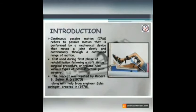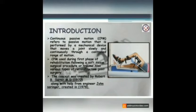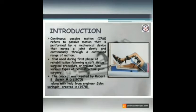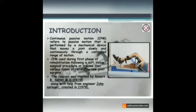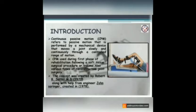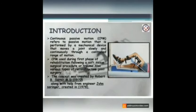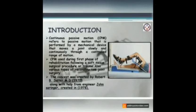CPM refers to passive motion performed by a mechanical device that moves joints slowly and continuously through a controlled range of motion. It is used during the first phase of rehabilitation following soft tissue surgical procedures or trauma, and in various types of reconstructive joint surgery.